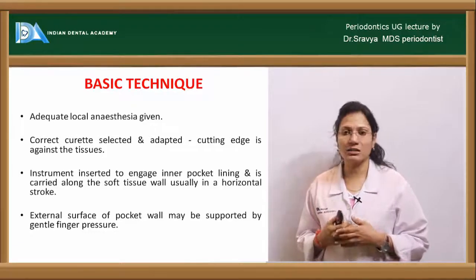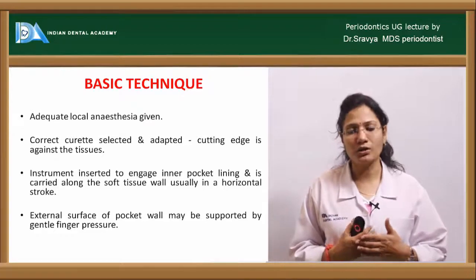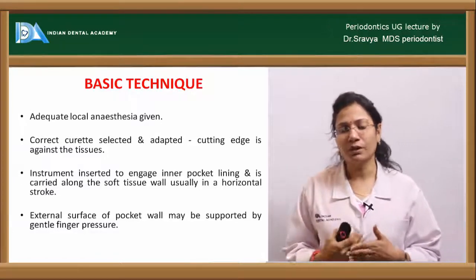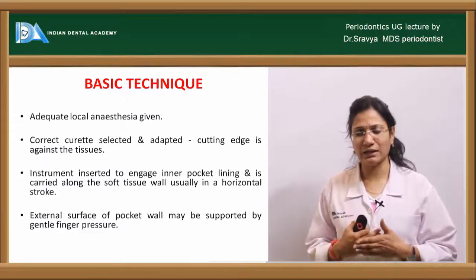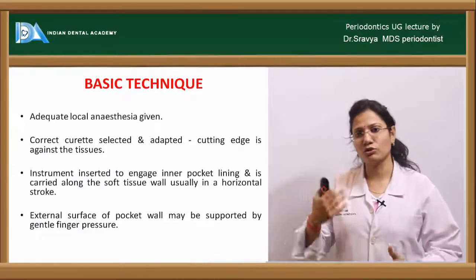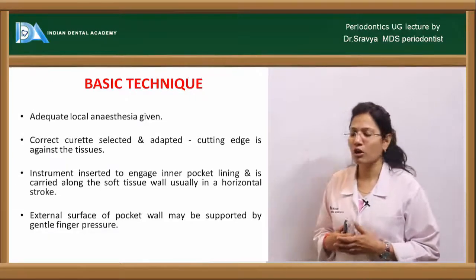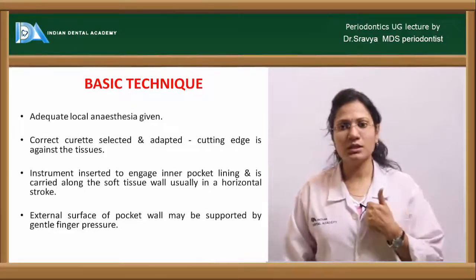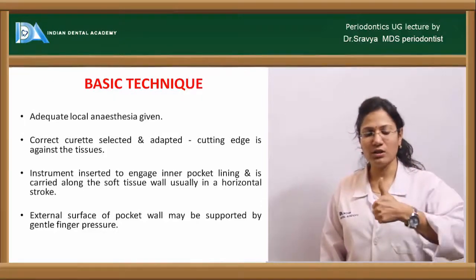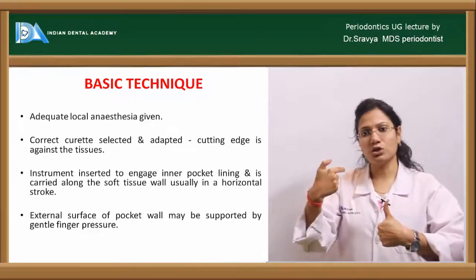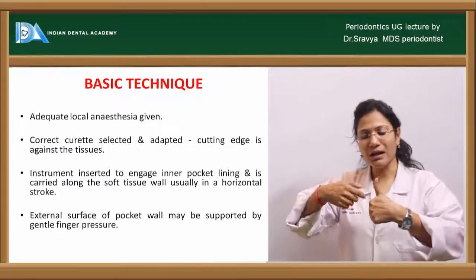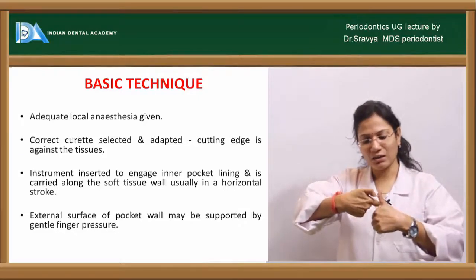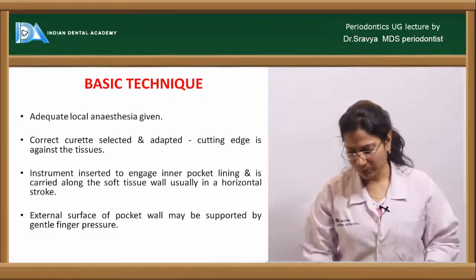You correctly adapt the curette edge to the inner soft tissue wall at a 0-degree angle, then give a slight obtuse angle greater than 90 degrees to perform a horizontal stroke. You provide external support through your index or thumb finger to the soft tissue, then insert the curette into the pocket and move it in a horizontal stroke to remove the soft tissue.